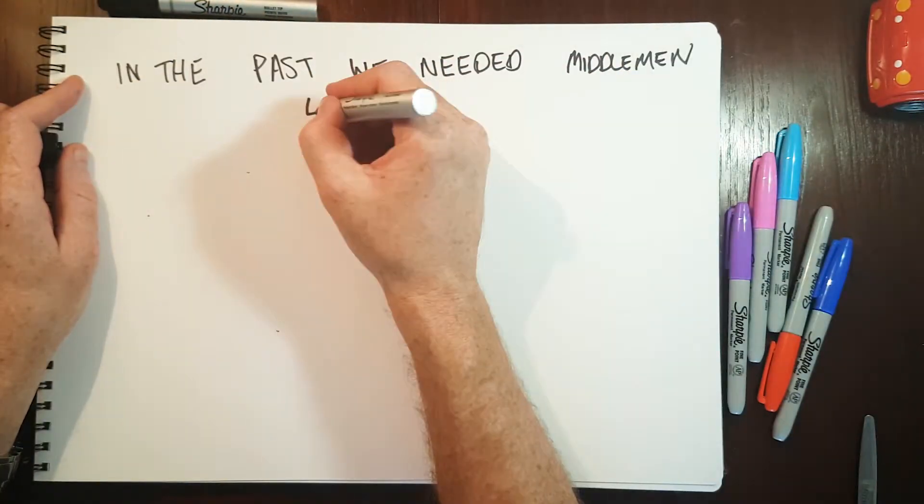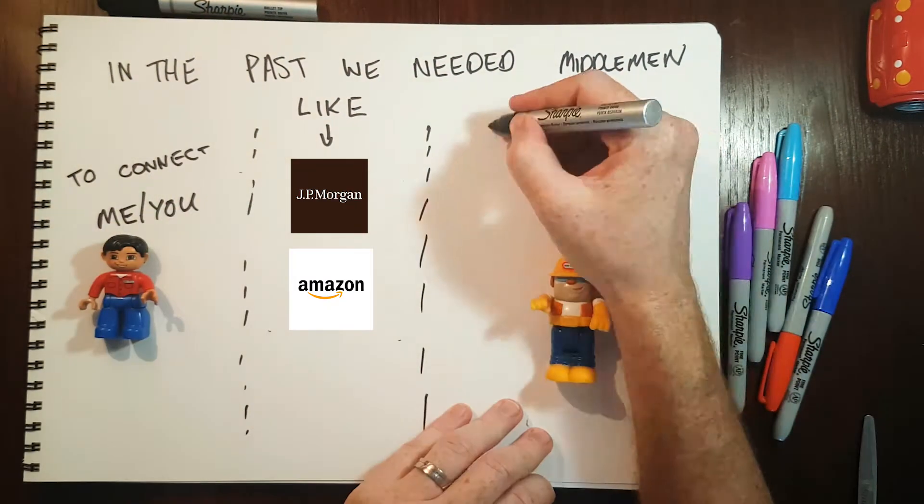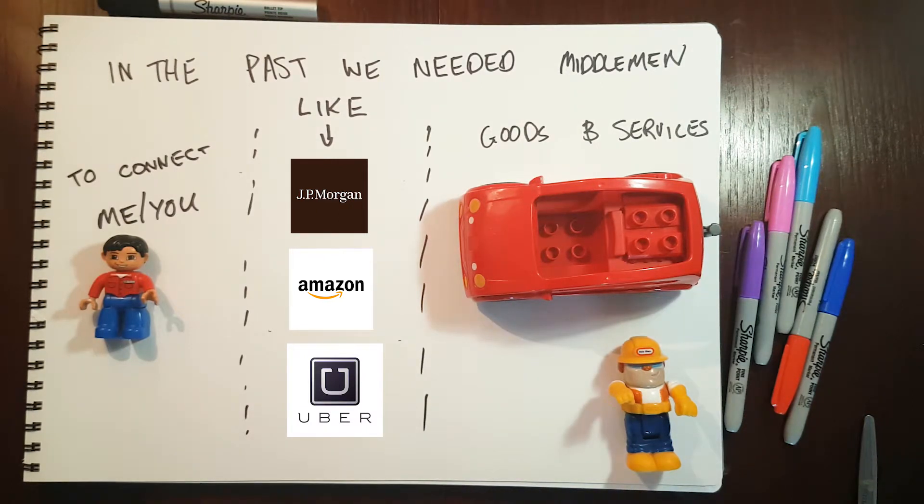The genius of this shared record book is that it doesn't require a middleman to function. You do not need to place trust in JP Morgan, Amazon, Uber or any middleman, as everyone has a copy of the record book. It's not controlled by a single person or company.